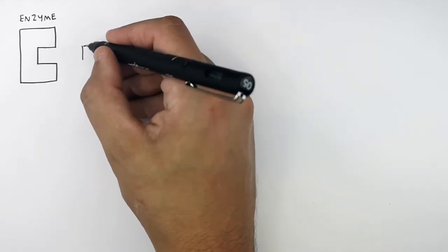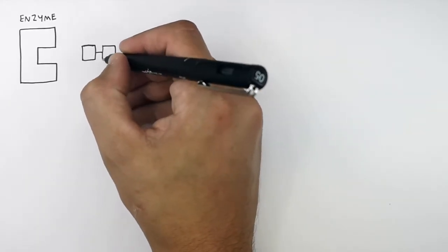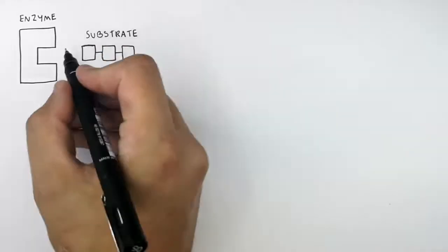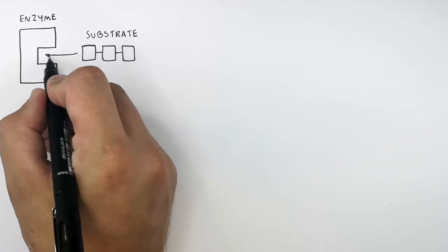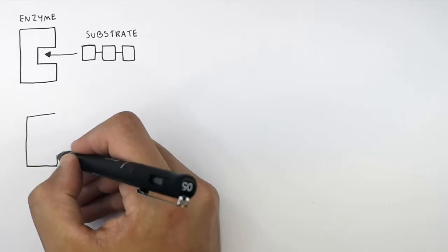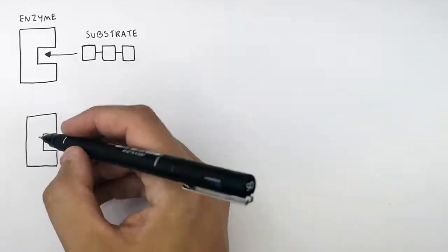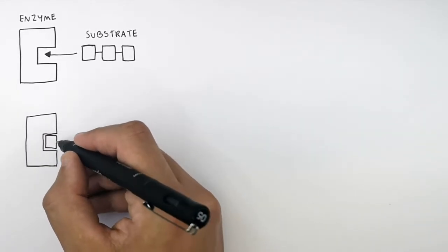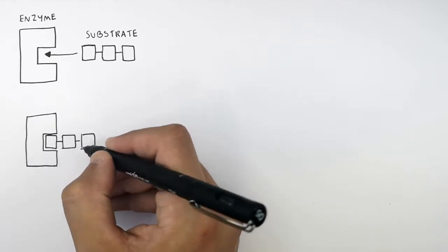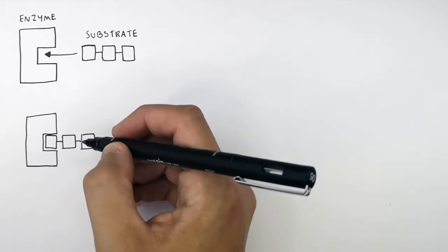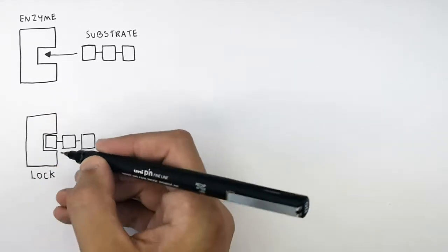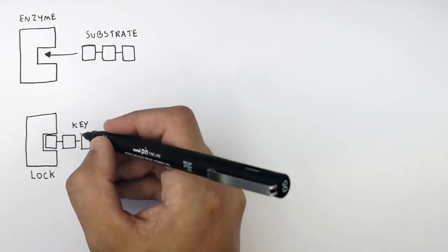This is the substrate that is going to be broken down by the enzyme. The substrate binds the active site of the enzyme. The substrate and the enzyme's active site are specific to one another — like a lock and a key — where the enzyme represents the lock and the substrate represents the key.